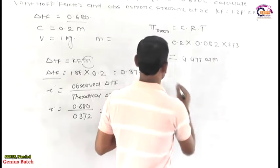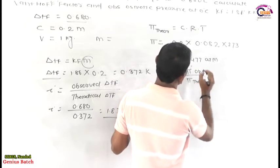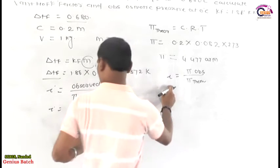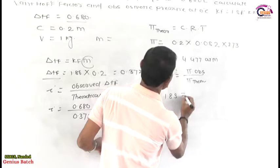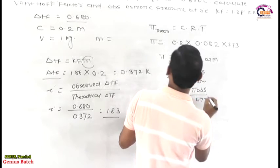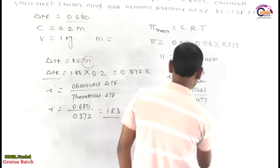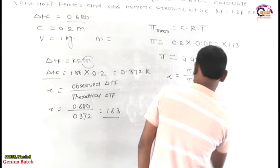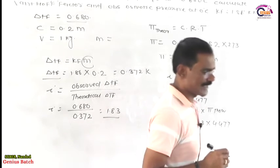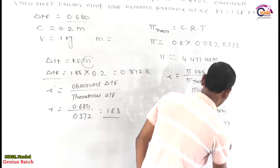Therefore, i equals pi_observed divided by pi_theoretical. We know the value of i is 1.83 and pi_theoretical is 4.477. So pi_observed equals i into pi_theoretical, that is 1.83 into 4.477. Therefore pi_observed becomes 8.19 atmosphere.